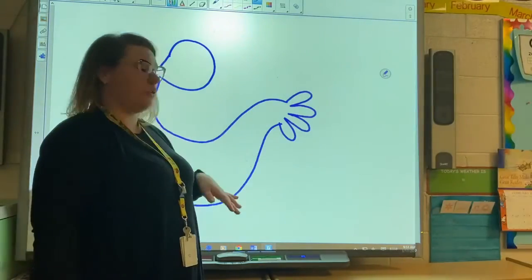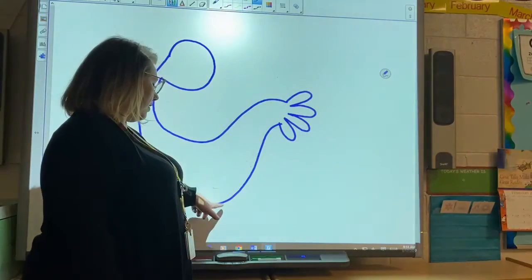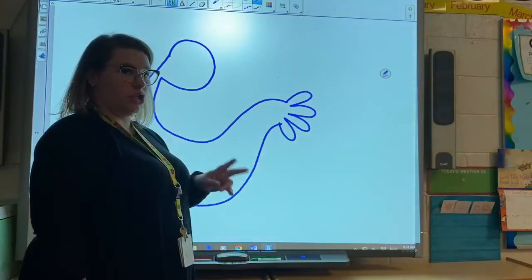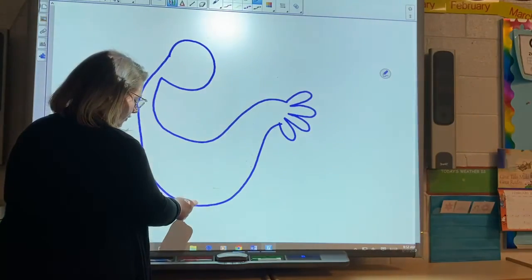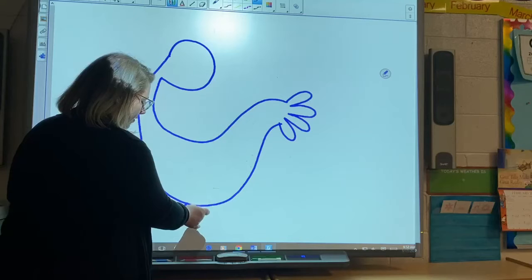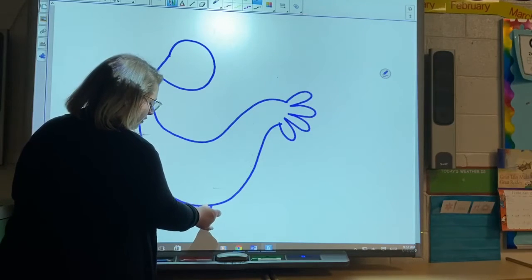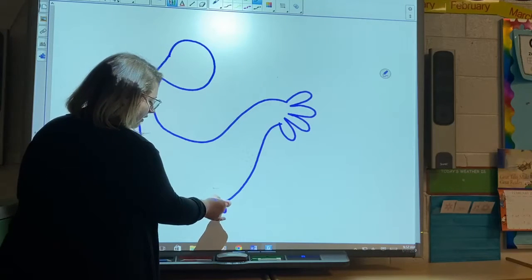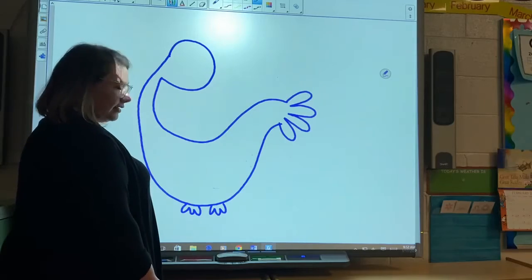Then we're going to add some legs down here. We're gonna add two legs and I'm gonna have some feathers on there too. So like our oval-shaped feathers. Two of them because our creature has two legs, okay?